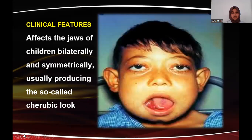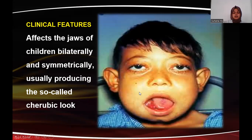Here is a picture of a child who has cherubism. The clinical features include bilateral and symmetrical involvement of the jaws in children, usually producing a cherubic look. This picture shows the symmetrical bilateral expansion of both jaws, and the child has a characteristic cherubic-like appearance — 'cherub' means angel, hence the angel-like look.